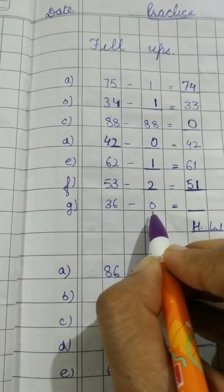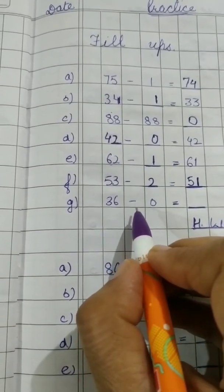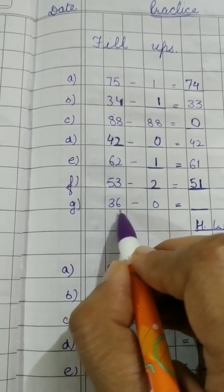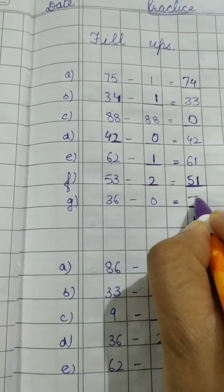36 minus 0. When we subtract 0 from something, the answer will always be the number itself. 36.